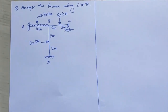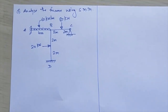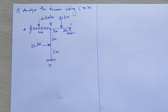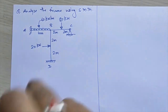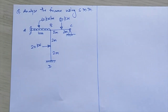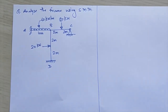Hello everyone and welcome. Today we will start with our next numerical on analysis of a non-sway frame using the stiffness matrix method. We will be conducting this numerical on frame ABCD. The loading in this frame includes a UDL on span AB, and in spans BC and CD a point load is provided at the center.